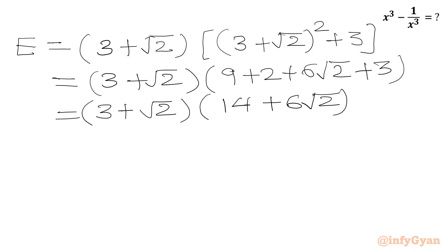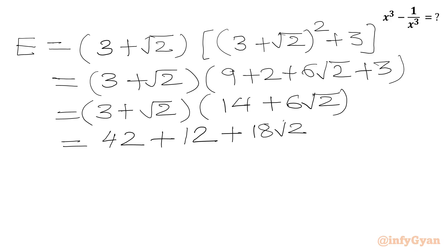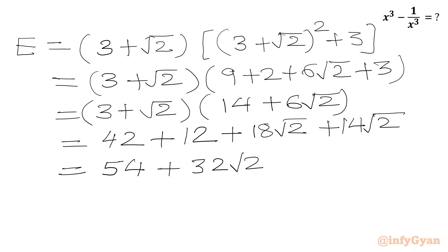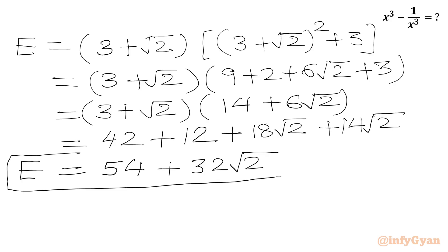Now we multiply the two brackets: 3 times 14 is 42, plus root 2 times 6 root 2 is 12, plus 3 times 6 root 2 is 18 root 2, plus root 2 times 14 is 14 root 2. So 42 plus 12 is 54, and 18 root 2 plus 14 root 2 is 32 root 2. Our final answer becomes 54 plus 32 root 2.